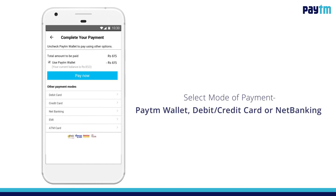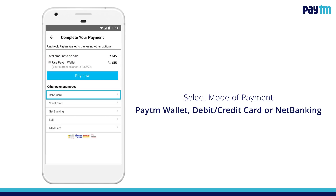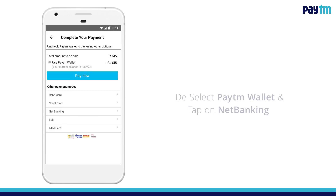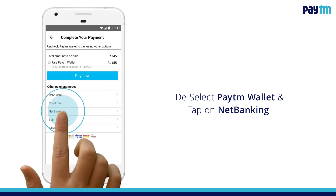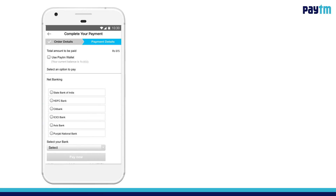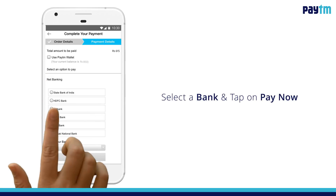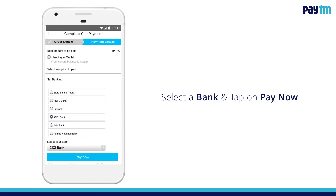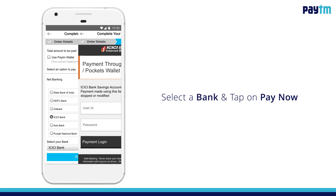Then tap on Proceed to Pay. Select your preferred mode of payment. You can either pay with your Paytm wallet or use your debit card, credit card, or net banking. To pay using only net banking, deselect the wallet option and click on Net Banking. Select your bank from the dropdown, then tap on Pay Now to proceed.